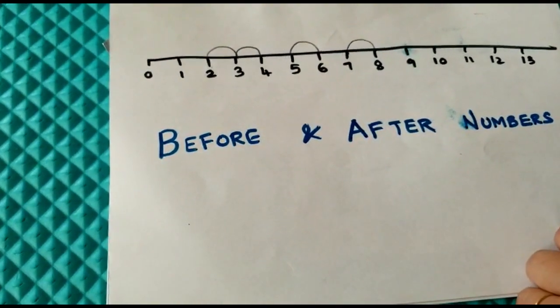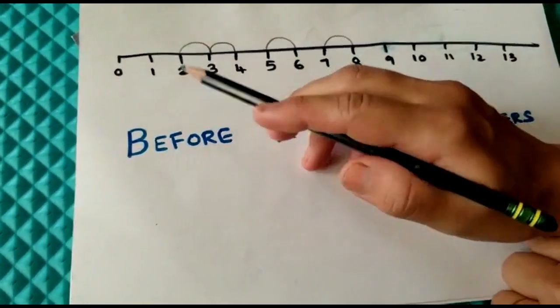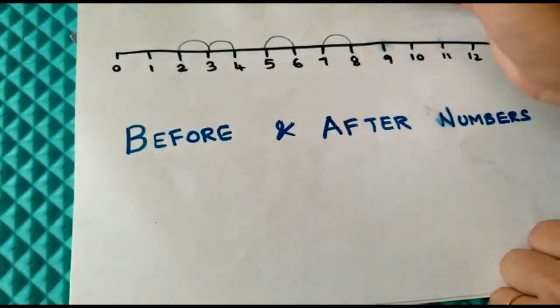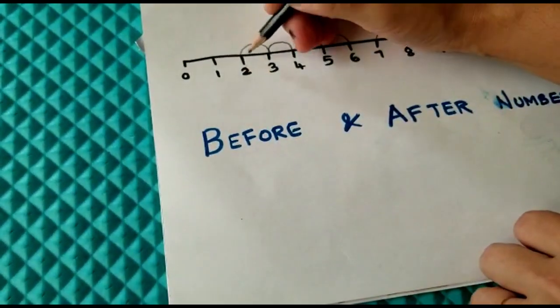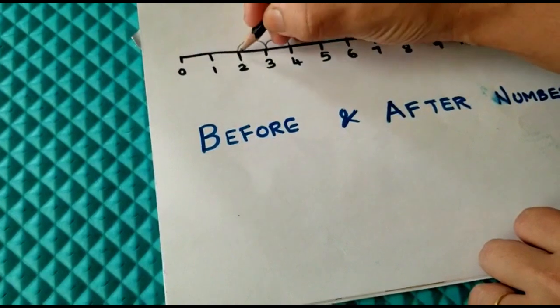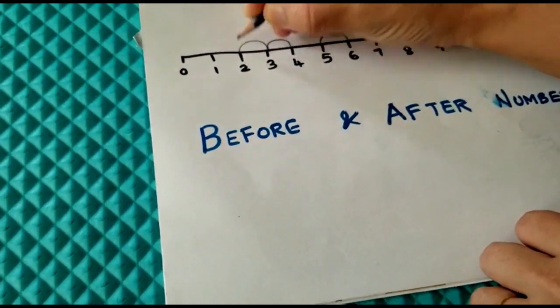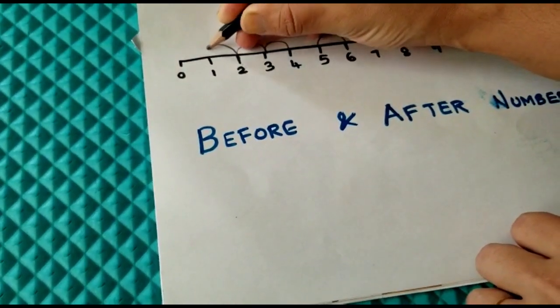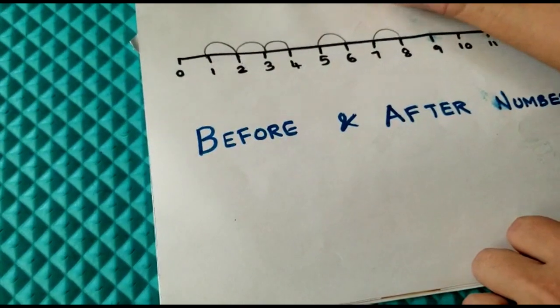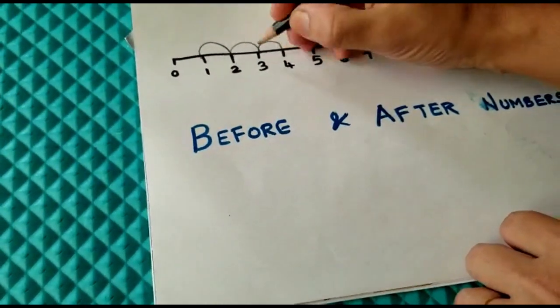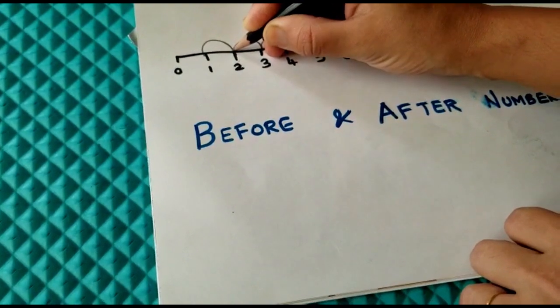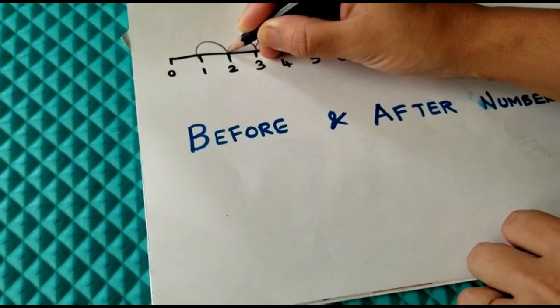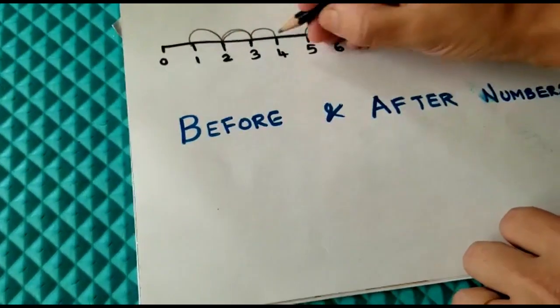And for before numbers, we can teach them like this: what comes before 2? So we have to go reverse, it's 1. What comes before 3? It's 2. What comes before 4? 3.